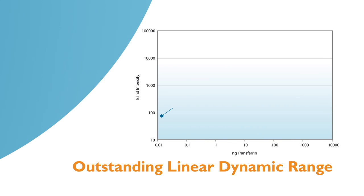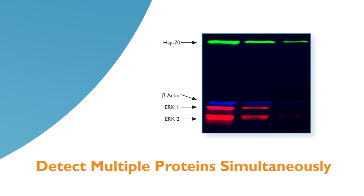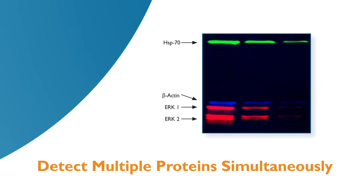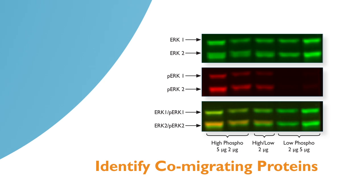Direct fluorescent Western detection is a stable, non-enzymatic alternative to chemiluminescence and film imaging, providing superior linearity without compromising sensitivity. Greater linearity and dynamic range can be attained, resulting in superior band clarity and proportional quantitative accuracy.